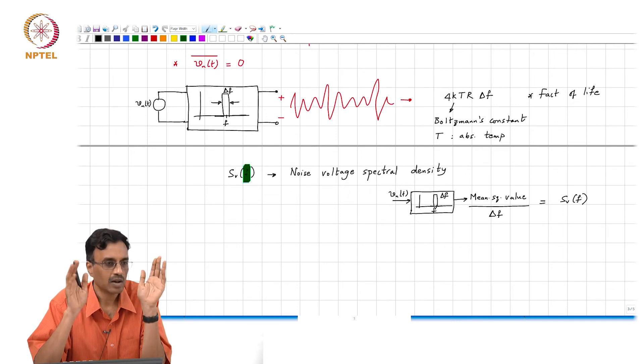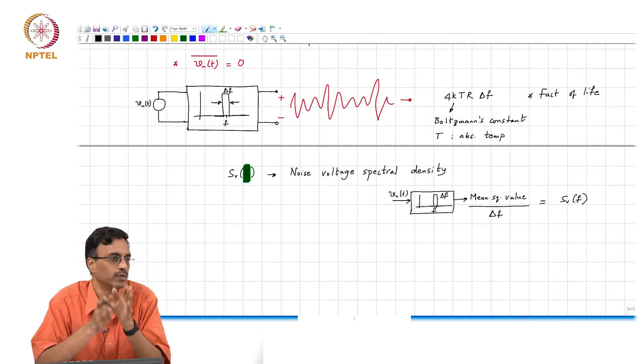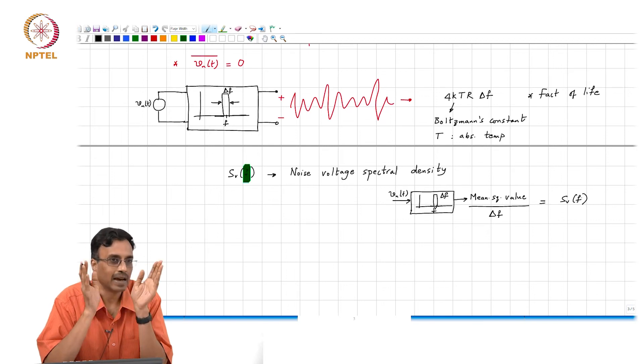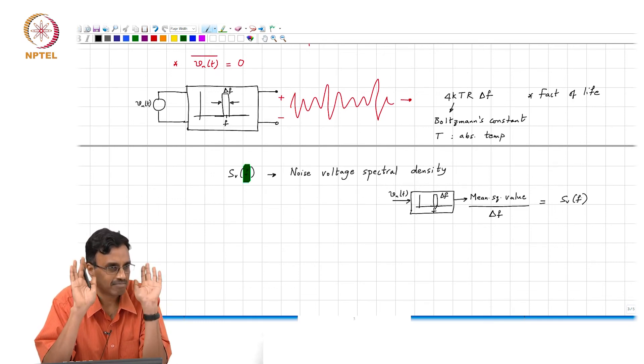What do you expect? If I make delta f zero, what do you expect at the output? You get nothing, correct. So clearly the mean square value must be dependent on the bandwidth of the band pass filter. So the mean square value divided by delta f is some measure of how much power there is in that waveform at that frequency. So this is what is called the voltage noise spectral density as a function of f.